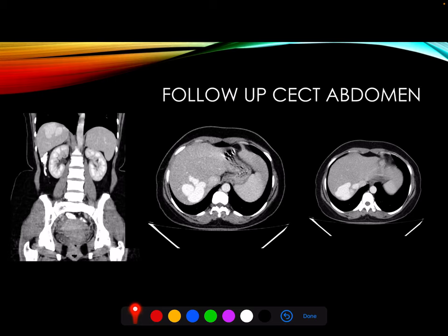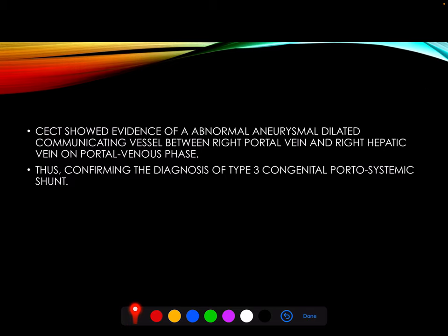On follow-up contrast enhanced CT abdomen, there was a large aneurysmal vascular channel in the right lobe of liver, which was communicating both with the right portal vein and the right hepatic vein, thus confirming the diagnosis of type III congenital portosystemic shunt.